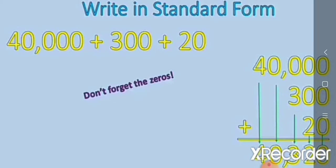Here is one more example. Here the thousands place is missing. Forty thousand plus three hundred plus twenty — also one place is missing. So add it in horizontal order: forty thousand plus three hundred plus twenty equals forty thousand three hundred and twenty — 40,320.